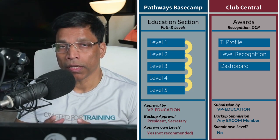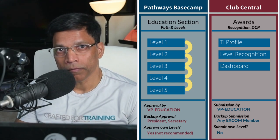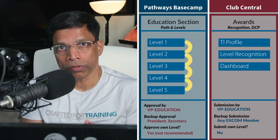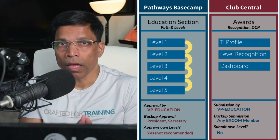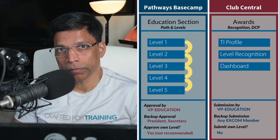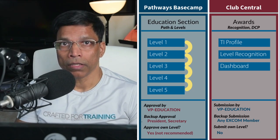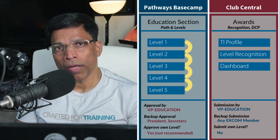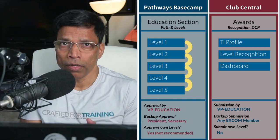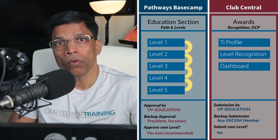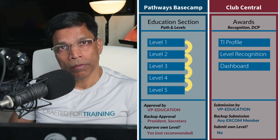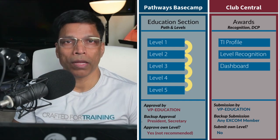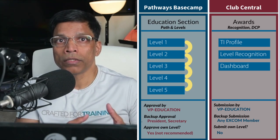In both cases other XCOM members can act as backups for the VP Education, but the roles differ. In Base Camp, only the President and the Secretary are considered as backups for the VP Education — so these three roles, VP Education, President, and Secretary, are considered as Base Camp Managers. In Club Central, any of the seven XCOM members from President all the way to Secretary can submit awards on behalf of the VP Education. The final bit of information: in Base Camp a Base Camp Manager can approve their own levels, though we don't recommend it, but it can be done. In Club Central there is a validation in place — if you are a VP Education trying to submit your own awards, you cannot do it. One of the other XCOM members must submit that award for you.